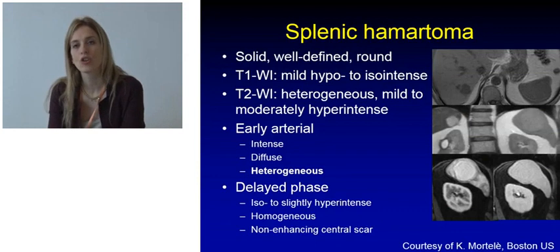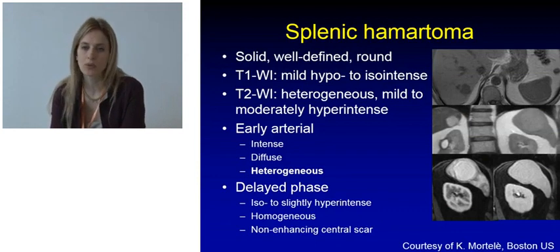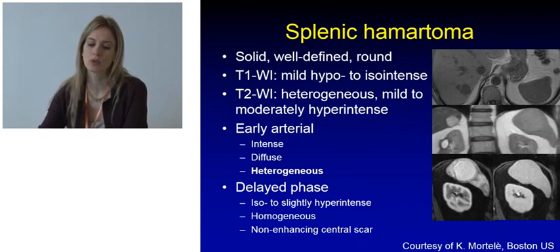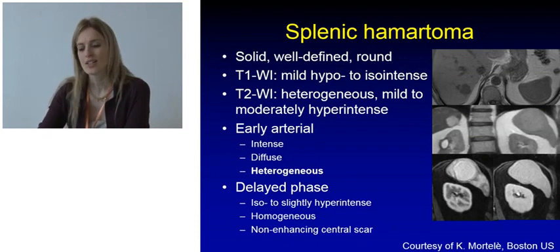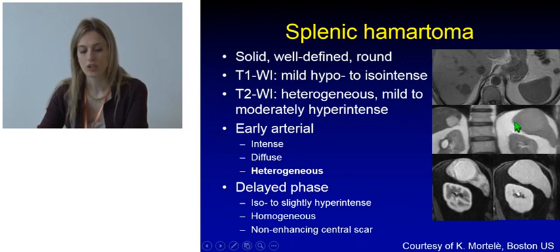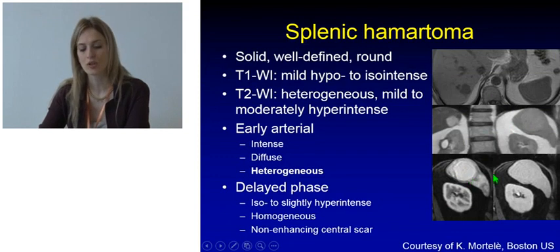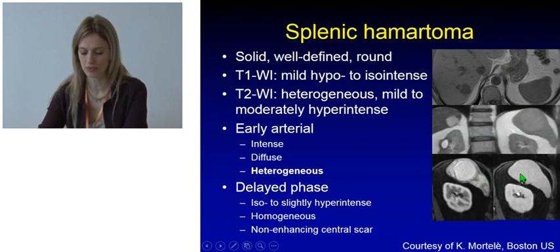Hamartoma is a solid, well-defined, round lesion. It can appear mildly hypo-intense to iso-intense on T1-weighted images, and on T2-weighted images it is going to be heterogeneous, slightly to moderately hyper-intense. After contrast administration there is intense and homogeneous or heterogeneous enhancement in the arterial phase, and the lesion remains iso-intense to slightly hyper-intense in the delayed phase.